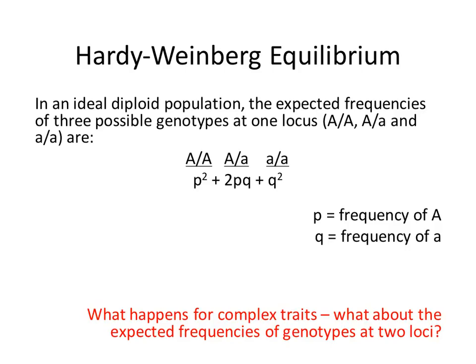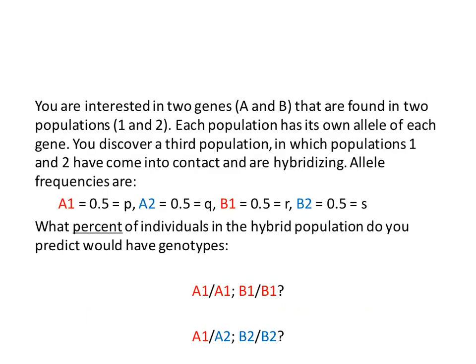So what happens to the expected frequencies of genotypes at two loci? I'm assuming we have a population with two genes, gene A and gene B, and there are two alleles of each — allele 1 and allele 2. You've got a third population where populations 1 and 2 have been hybridizing, making offspring that carry versions of alleles 1 and 2 at both genes A and B.